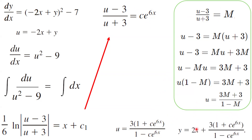Recalling that u was defined as negative 2x plus y, we substitute back: y equals 2x plus 3 times 1 plus c·e^(6x) divided by 1 minus c·e^(6x). This is the solution to the differential equation, obtained through substitution, algebra, and partial fractions.